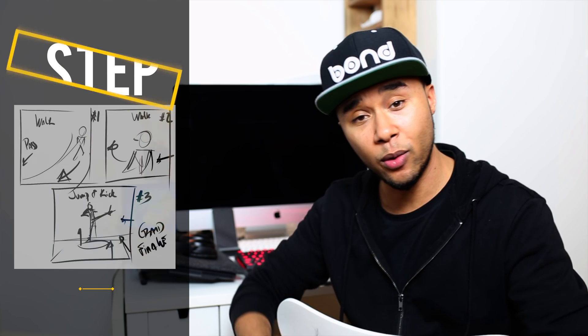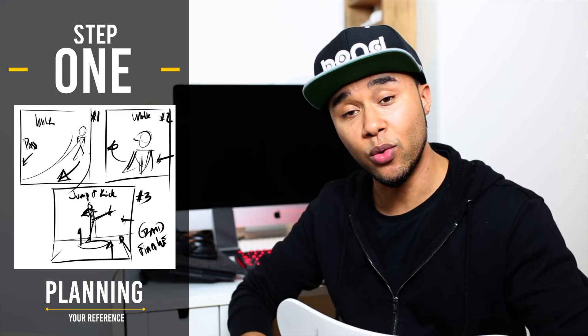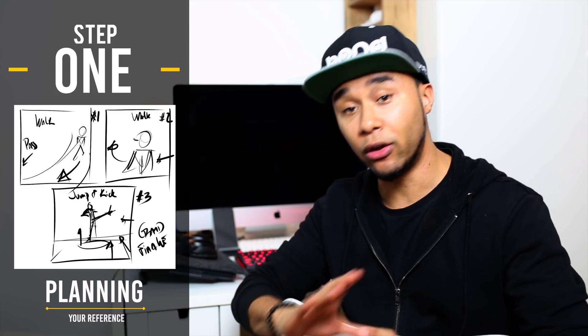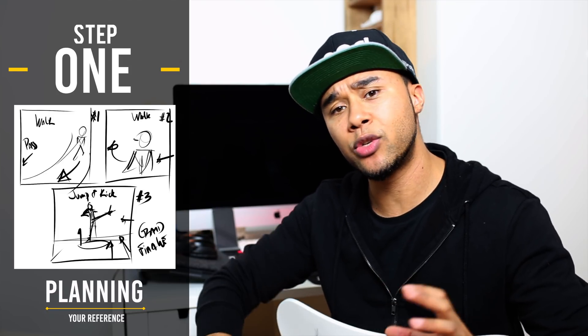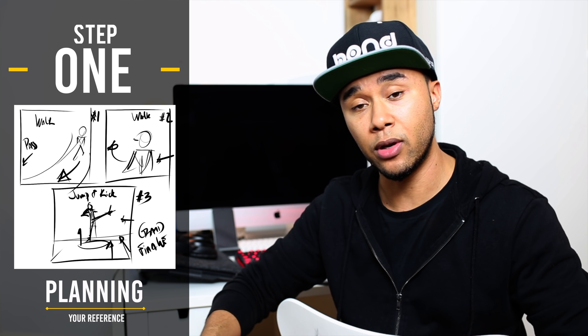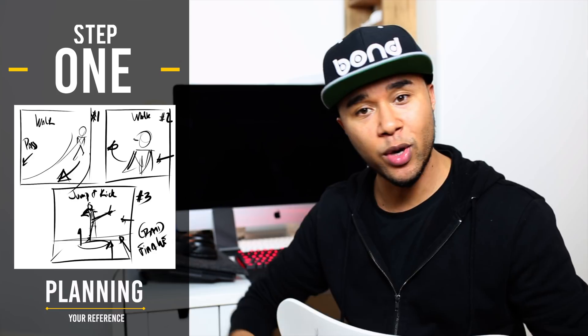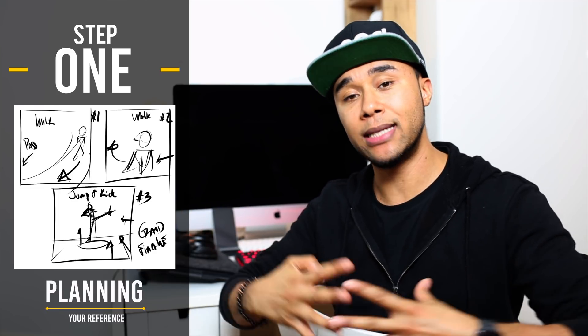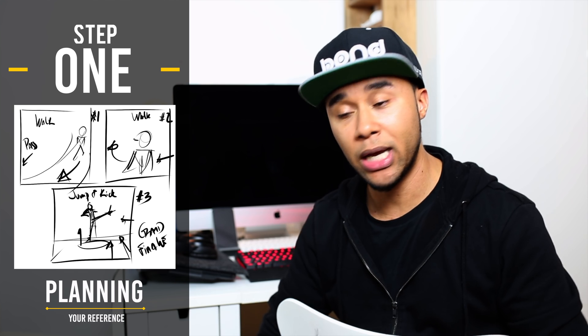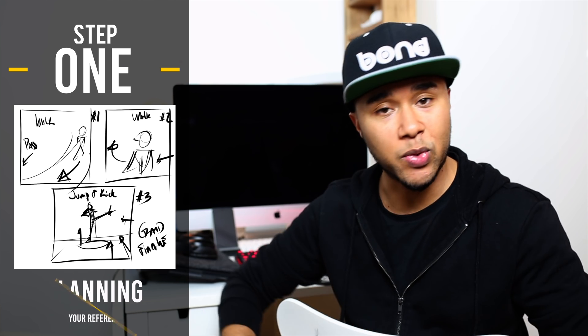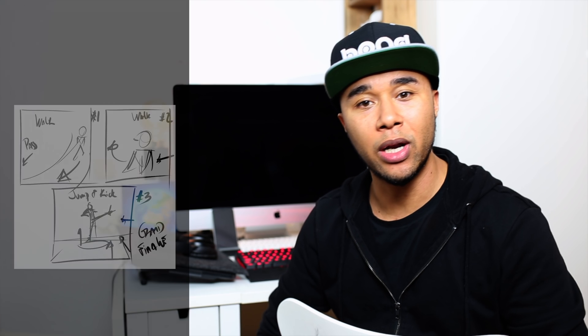The first step before you do anything else is to think very hard and plan very well what exactly you are going to shoot and how it's going to look in your final shot. You need to make sure that when you take your reference it looks as close as possible to what your final animation is going to be. You can use props, different angles, editing — whatever magic you want to use — you need to make sure it blends together very well. Plan it out, draw some stuff, and think about exactly what you want to accomplish. That is the first step.